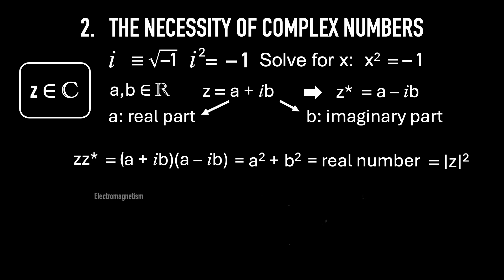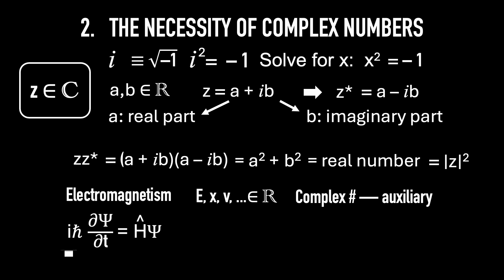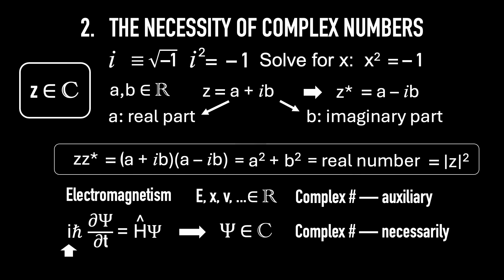People use them in electromagnetism and sometimes even in classical mechanics. However, in those cases, everything in the equations, like the electric field, position, or velocity, is real. So the use of complex numbers is just auxiliary. On the other hand, in quantum mechanics, the equation already has an i. Psi is a complex number, necessarily, and you can never measure it. This was the issue of the physical interpretation. Max Born had the breakthrough idea: use the norm, as described above, to measure the probabilities of the wave function. That was a great discovery, and it had a lot to do with the development of quantum mechanics.